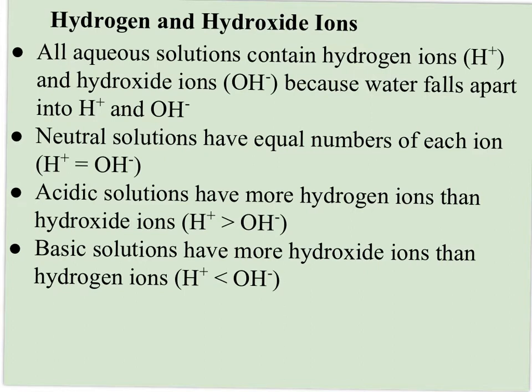All aqueous solutions contain hydrogen ions and hydroxide ions because water contains both these ions. Instead of thinking of water as H2O, especially as we study acid-base chemistry, think of water as HOH. It's still neutral because you have a positive hydrogen ion and a negative hydroxide ion. Some of those water molecules will fall apart into H+ and OH-, and in a neutral solution you have equal numbers of each, since each water molecule has one of each.